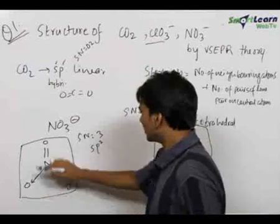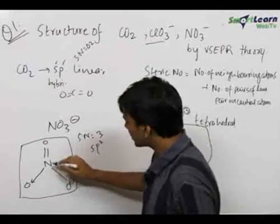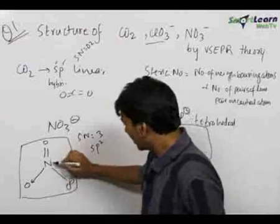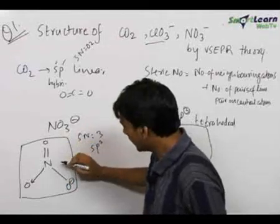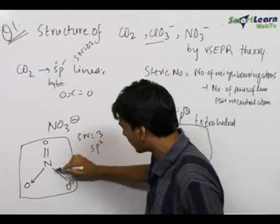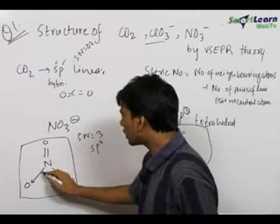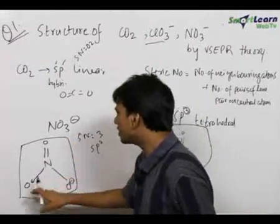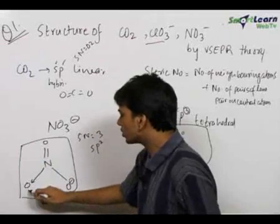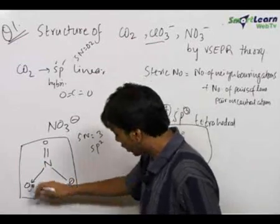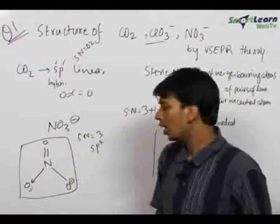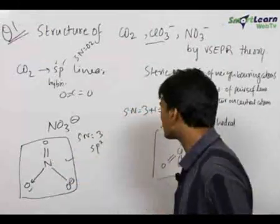We can see that the octet of all the oxygen atoms and the nitrogen atom is complete. Nitrogen had 5 electrons initially. It took 2 electrons from one oxygen via the double bond and 1 electron from another oxygen via the single bond. A coordinate bond is formed in which both electrons are donated by the nitrogen atom, so that the third oxygen also completes its octet and nitrogen does not gain any extra electrons.